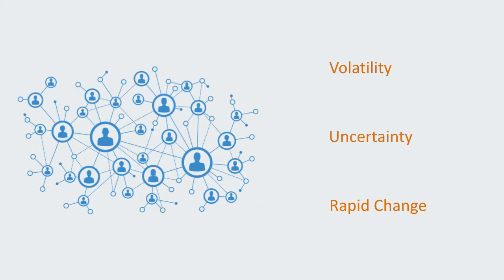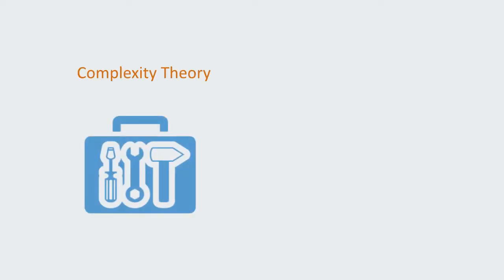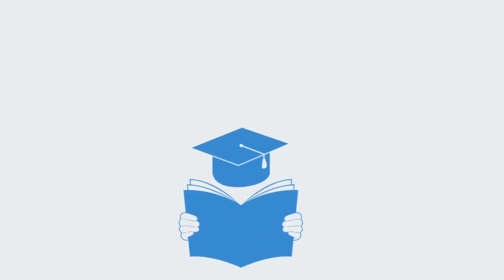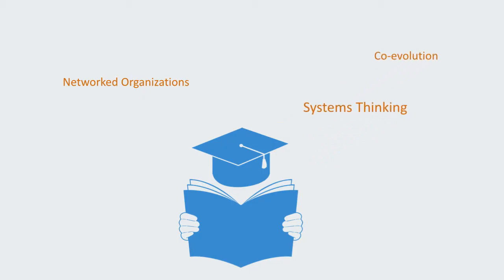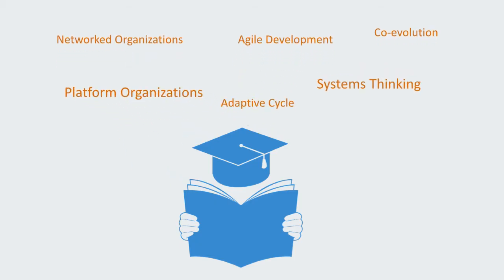This course is a first of its kind, bringing together some of the latest ideas from complexity theory and emerging approaches to the management of complex organizations. During this course we will explore many of these new ideas including network organizations, co-evolution, systems thinking, platform organizations, agile development, and the adaptive cycle, to name just a few.